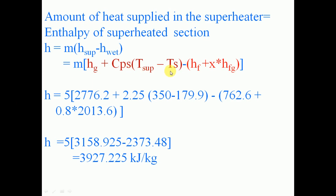All terms are now known from the steam table and given data. Substituting: M = 5 kg, HG = 2776.2, CPS = 2.25, T_sup = 350, Ts = 179.9, HF = 762.6, X = 0.8, HFG = 2013.6. After calculation: H = 5 × (3158.9425 − 2373.48).